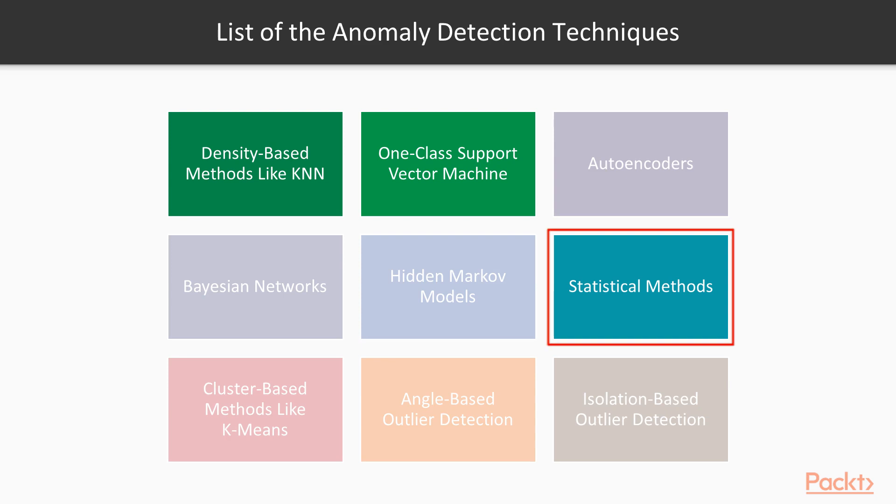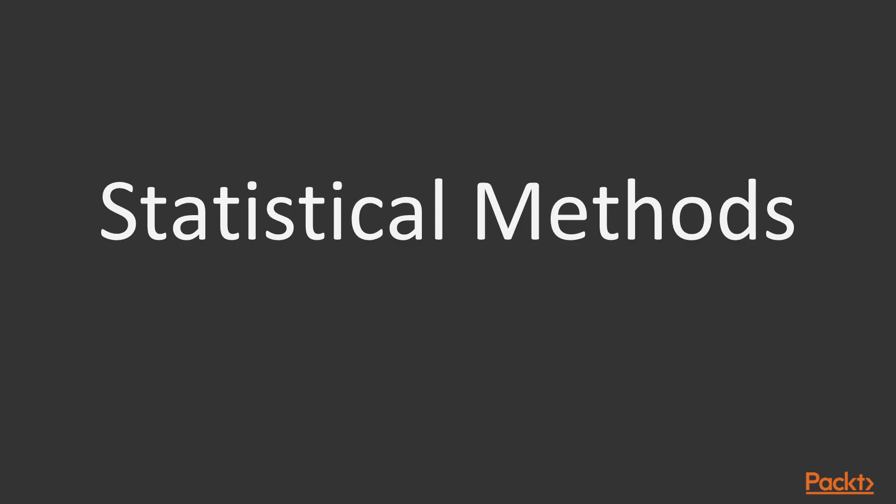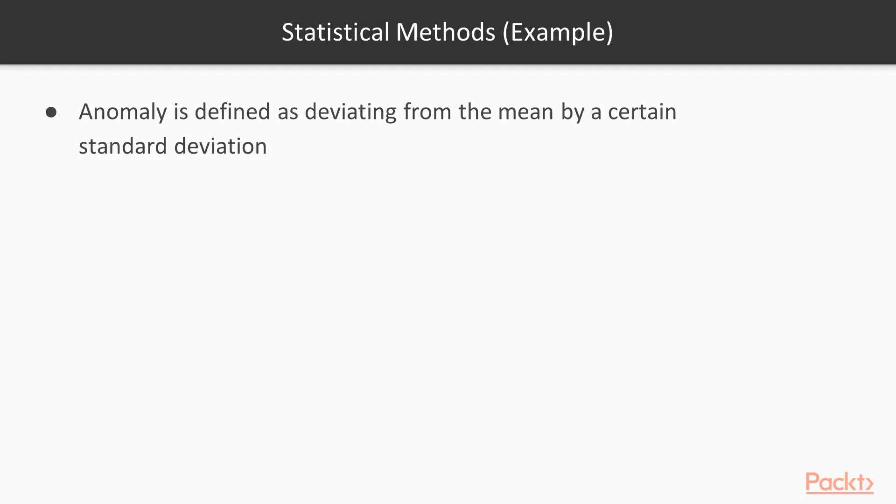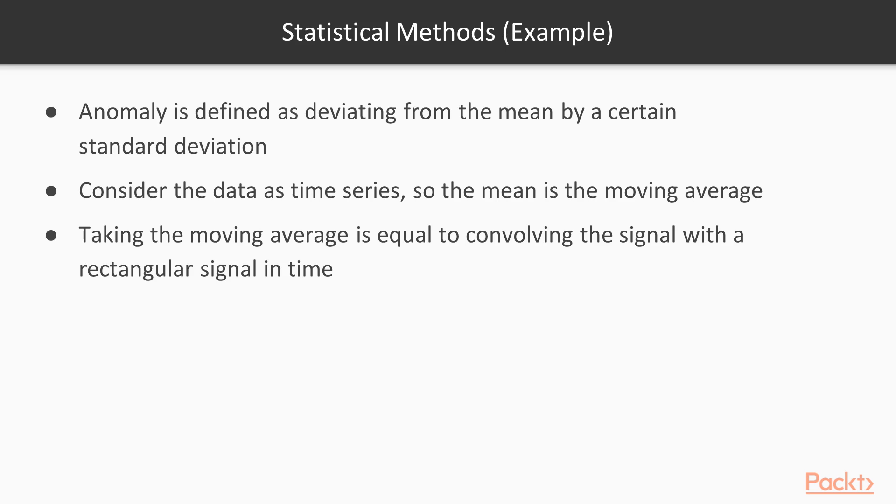The statistical methods, the density-based anomaly detection, and the one-class support vector machines. In this slide, we are going to explain about the statistical methods that are used in order to detect the outliers. In this method, we can detect the outlier which is defined as a data point that lies far away from the mean, the median, the mode, or the quantile of the data. A simple example is that the anomaly is defined as a data point that deviates from the mean by a certain standard deviation. Consider the data as a time series, so the mean is the moving average. Taking the moving average is equal to convolving with a rectangular signal in the time, which is equal to multiplying by a low-pass filter in the frequency domain.